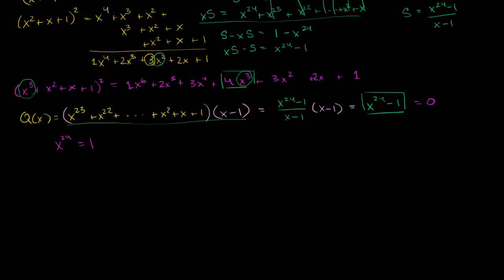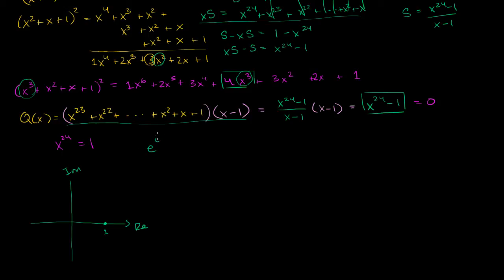This is going to delve a little bit into the complex plane. As a refresher, to find the 24th roots of 1, remember we can rewrite 1 on the complex plane — the real axis and the imaginary axis. One sits right here with only a real part. We can rewrite 1 as e to the i times 0, or equivalently e to the 2 pi i, since adding 2 pi just goes around the complex plane once.